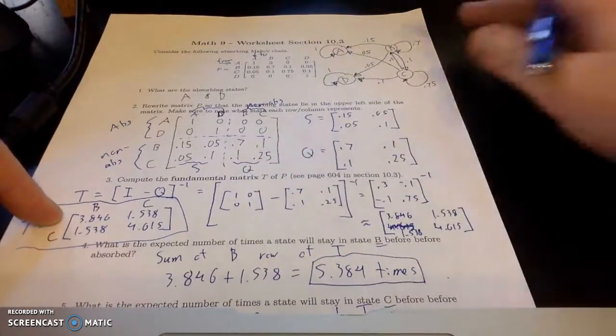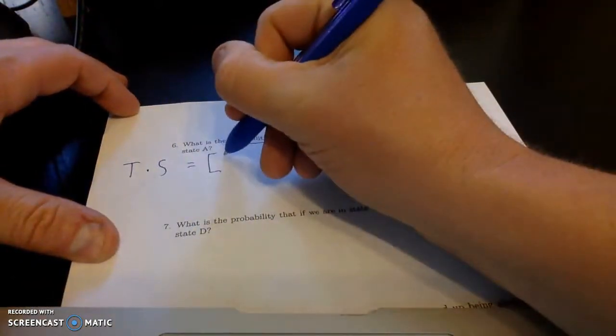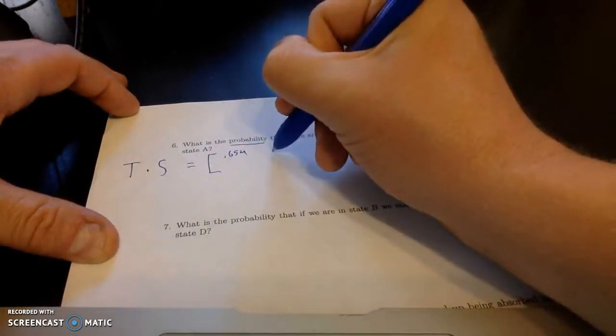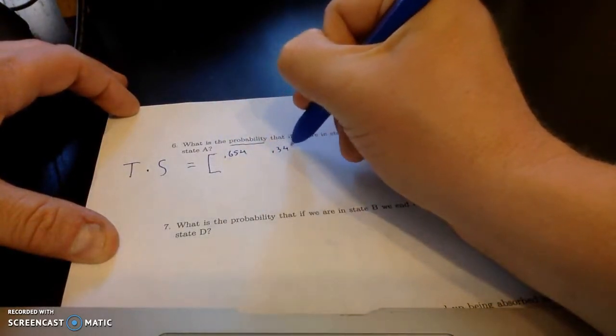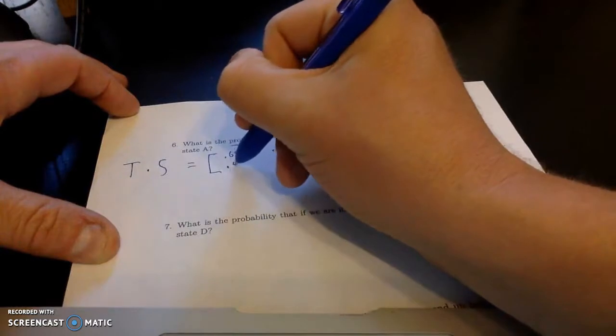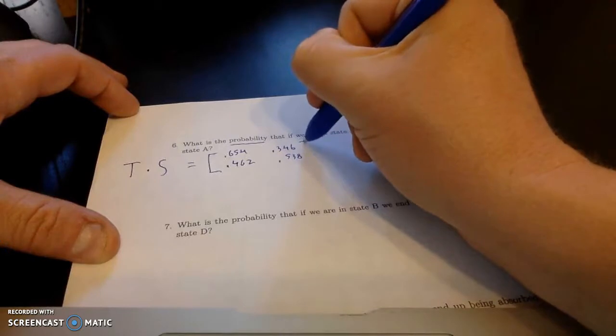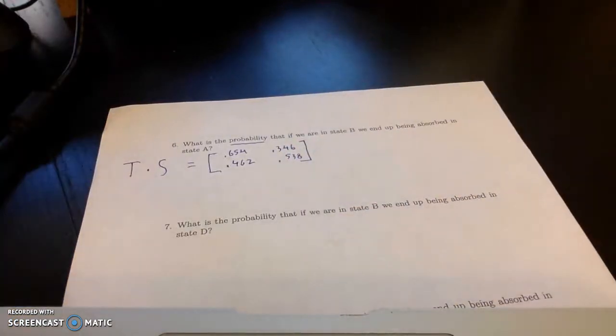So matrix T times matrix S. And since there's kind of messy decimals there, I just leave those in my calculator. T times S, and you should get 0.654, 0.346, 0.462, and 0.538.